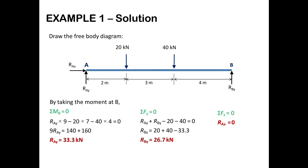Now applying the second equation of static equilibrium, summation of FY equal to zero. Using the sign convention of vertically upward positive and vertically downward negative: RAY and RBY are positive, while 20kN and 40kN forces are negative. So RAY + RBY − 20 − 40 = 0. Since RAY = 33.3 kN, we get RBY = 26.7 kN.